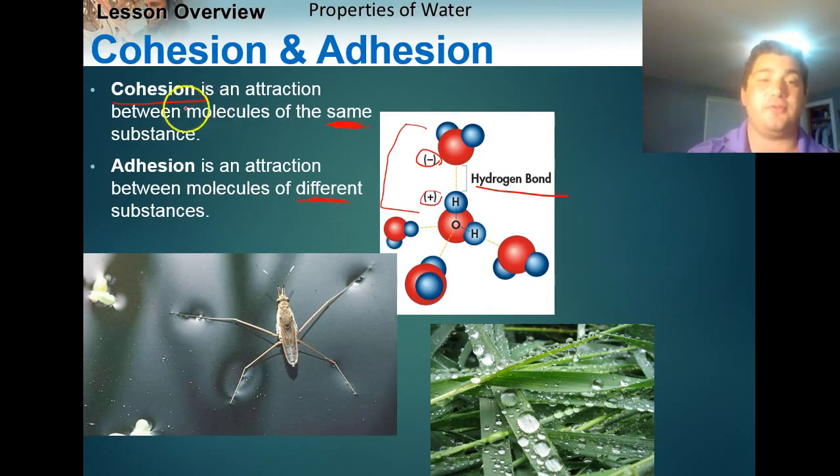And a great example of cohesion would be like this water strider down here, this bug. He can glide on the water and not sink because all the water molecules underneath him are lining up in this structure, making hydrogen bonds. And because they line up, they form a really tight knit bond that allows the hydrogen bond that allows that bug to float on the water without popping through.